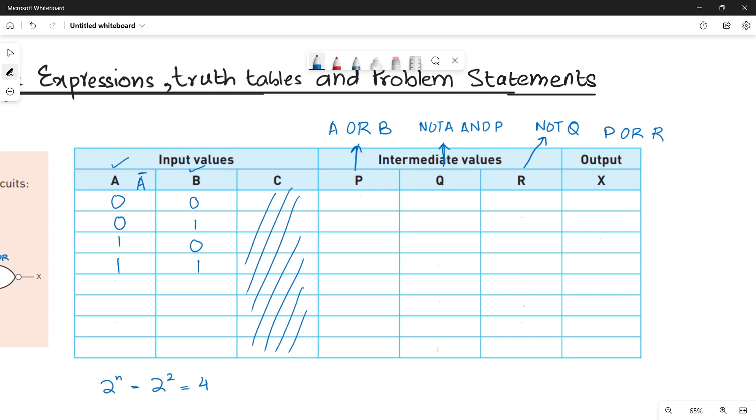Next, let's do A or B for the values of P. OR means that you have to do the addition between the binary values. So it will be 0 plus 0, 0. 0 plus 1, 1. 1 plus 0 is 1. 1 plus 1 is 1.